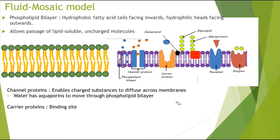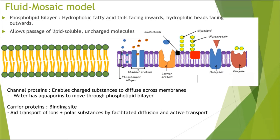Moving on to carrier proteins. These have a binding site, and when something binds to them they change shape, which allows substances to pass through — we'll go through that in more detail later. They aid the transport of ions and polar substances by facilitated diffusion, which doesn't require ATP, or by active transport, which does require ATP.